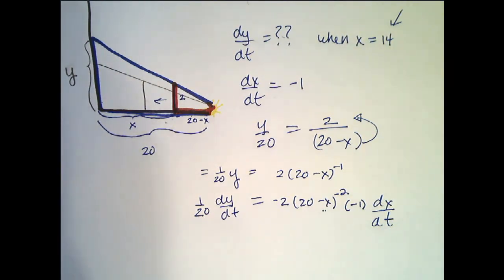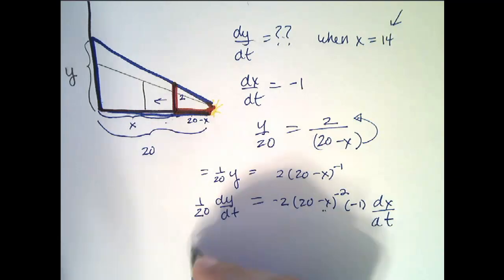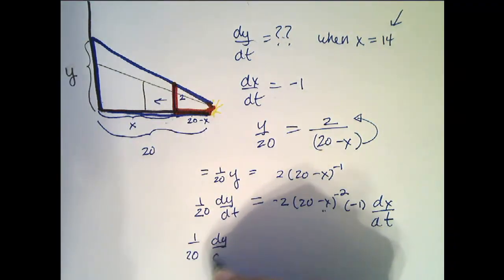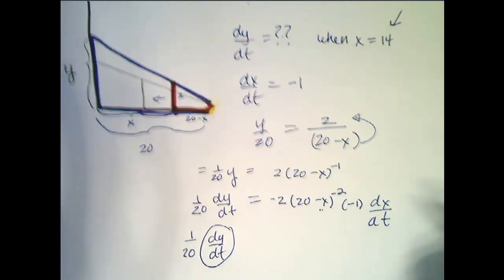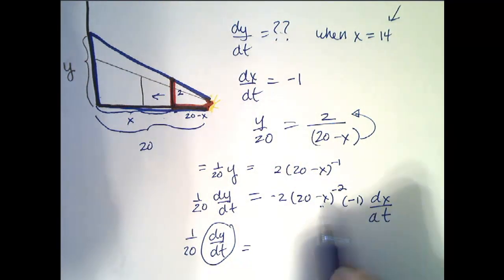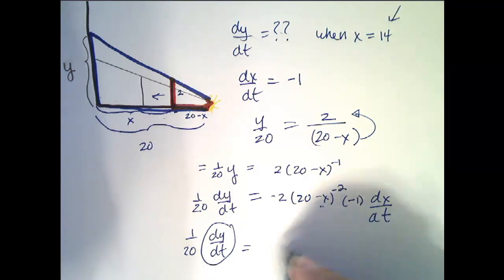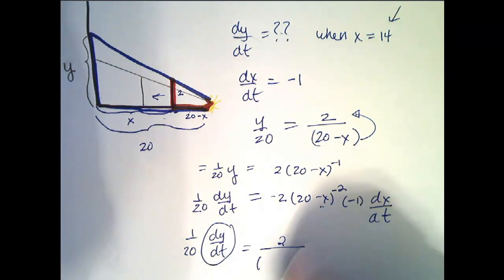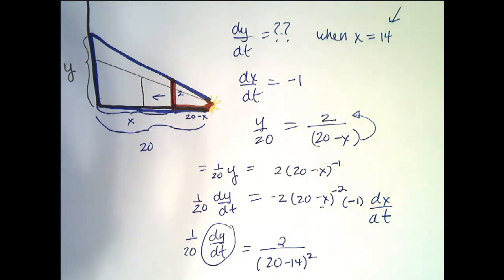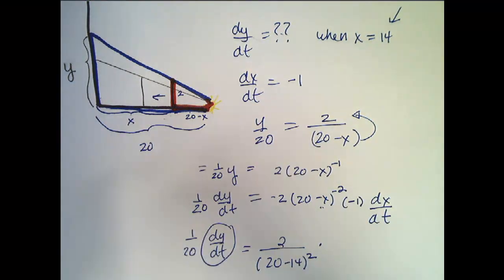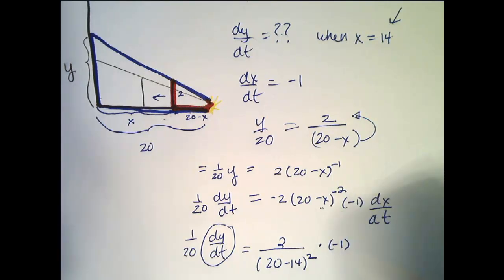Now we're ready to plug everything in. So I get 1 over 20 dy/dt, well that's what I'm looking for, so I like to circle it to remind myself, equals, now I can fix this a little bit, so this really becomes 2 on the top, (20 minus X), and in this case 14 squared on the bottom, times dx/dt, which is minus 1.